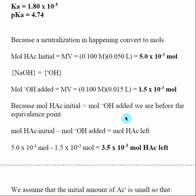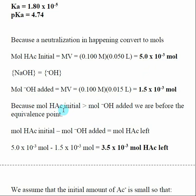Now we ask: where are we on the titration curve? We compare the amount of added hydroxide to the amount of weak acid we started with. Because we have more moles of weak acid than hydroxide added, we are before the equivalence point. We've added some hydroxide, but since its moles are less than the moles of weak acid, we have not reached the equivalence point.